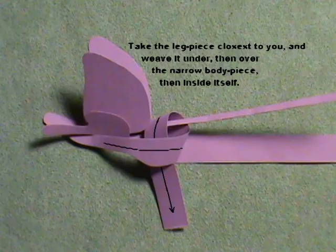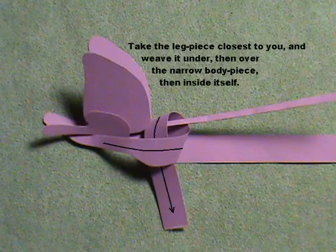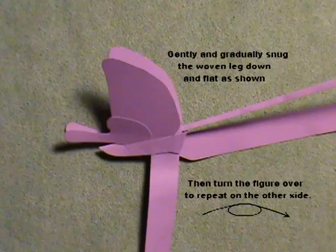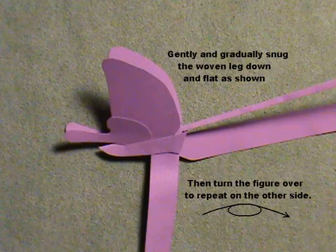Take the leg piece closest to you and weave it under, then over the narrow body piece, then inside itself. Gently and gradually snug the woven leg down and flat as shown.